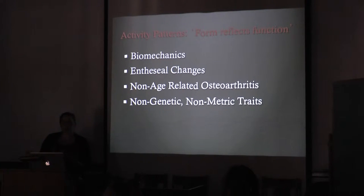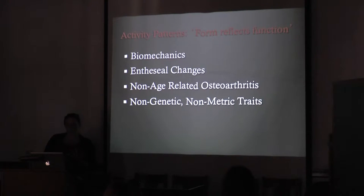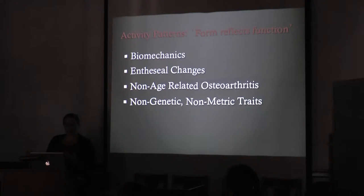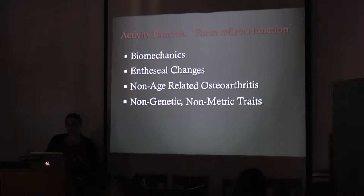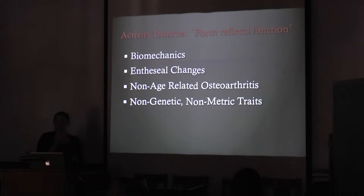The four main categories of skeletal activity pattern analyses that employ a form-reflects-function premise are biomechanics, musculoskeletal insertion studies (entheseal changes), non-pathological osteoarthritis, and non-genetic non-metric traits. A whole-body life course approach combining a variety of these activity pattern analyses provides the strongest support for activity-related morphological variations and their development during life. In the study of the historic Minden Beemster population, all four analyses were employed; however, only the last three will be discussed in this presentation.